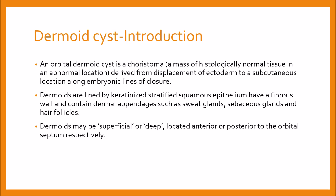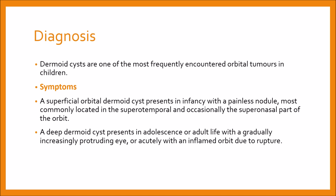Dermoids may be superficial or deep, located anteriorly or posteriorly to the orbital septum. Dermoid cysts are one of the most frequently encountered orbital tumors in children. Superficial orbital dermoid cysts present in infancy with a painless nodule most commonly located in the supratemporal and occasionally the supramedial part of the orbit. Deep dermoid cysts present in adolescence or adult life with a gradually increasing proptosis or acutely with an inflamed orbit due to rupture.